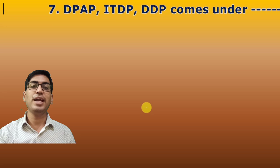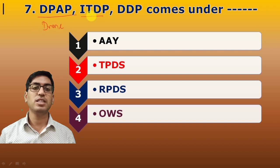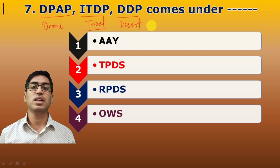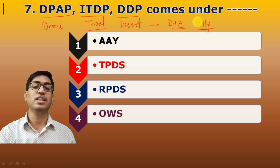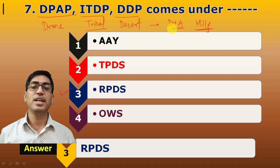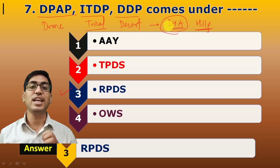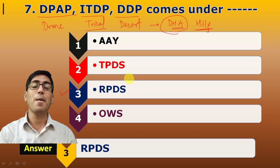Seventh question: DPAD, ITDP, and DDP — what do these come under? DPAD is typically for the Drought Area Program. ITDP is the Integrated Tribal Development Program. DDP is the Desert Development Program. All these come under Designated Hilly Areas, which fall under RPDS — Revamped Public Distribution System.